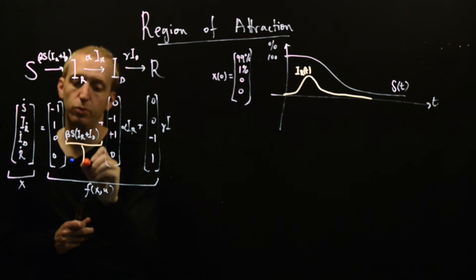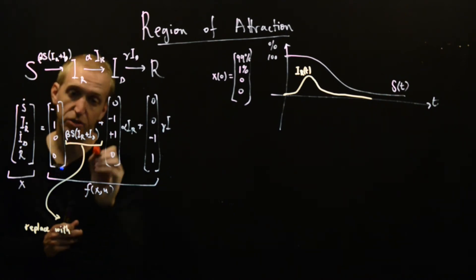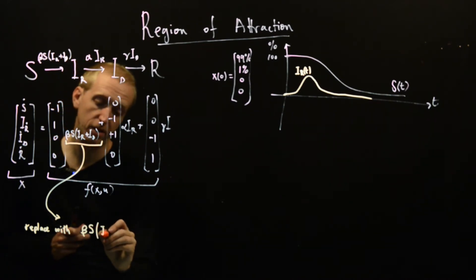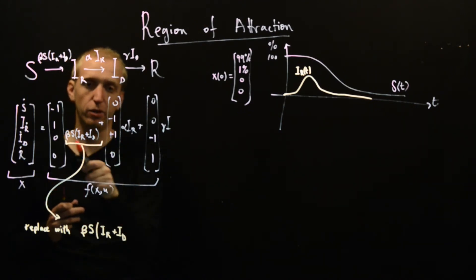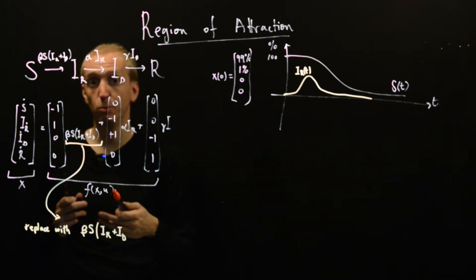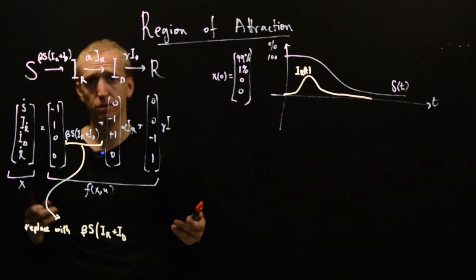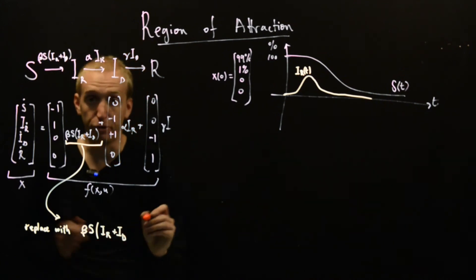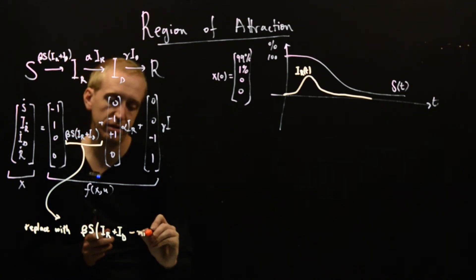So that's fine but we want to investigate test and trace so let's try to include that in our model. So what we're going to do is we're going to replace this rate with this. We're going to keep the beta, we're going to keep the S, and here we're going to have IR plus ID. So at the moment nothing has changed, this is exactly equal to this. And now let's just try to remember roughly what was going on here. So we said new infections were caused by susceptible people meeting infectious people, that's why it was S multiplied by all the infectious people. But now we're saying that we can discover people with test and trace and remove them from our population.